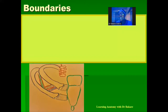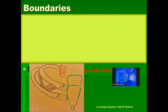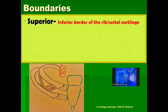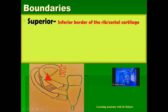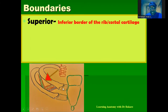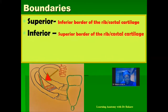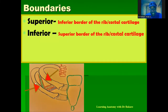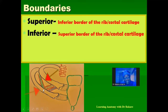Let's look at the boundaries of the intercostal spaces. Each intercostal space is bounded superiorly by the inferior border of the rib and its corresponding costal cartilage. Inferiorly, it is bounded by the superior border of the rib below the intercostal space and the corresponding costal cartilage, which is located anteriorly.